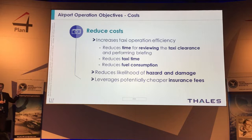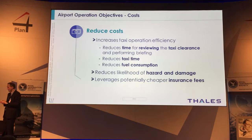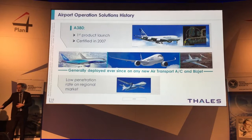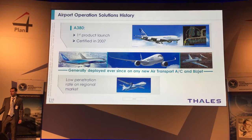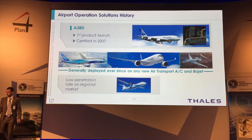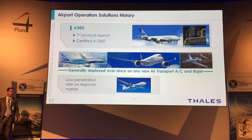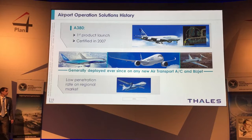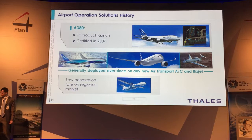That was an overview of the different solutions that currently exist today — the Taxi Bot does not exist today but will be certified in the following years. Now Olivier will describe the different airport operation functions in more detail. As mentioned, the Airport Moving Map function was first introduced with the Airbus A380 with British Airways and was certified in 2007, so it's a pretty new product. Since that aircraft, it has been generally deployed on any new commercial transport aircraft and any new bizjet.